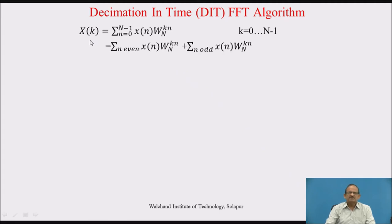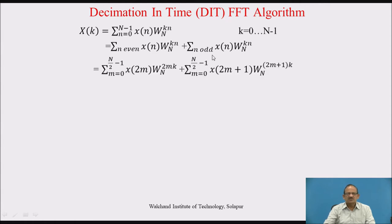This X(k) can be written in terms of even samples of x(n) and odd samples of x(n). This summation can be divided into two parts where all even-valued samples are taken in the first summation and odd-valued in the second summation. This can be written as x(2m), where m goes from 0 to N/2 minus 1, and n is replaced by 2m, giving W_N^(2mk).